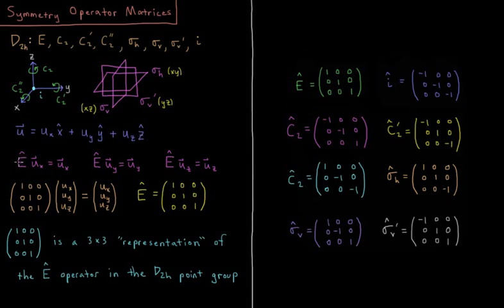So if we operate with the identity on this vector, E applied to the X part of it would just give the same back. E applied to the Y part of that vector would just give the same thing back. And E applied to the Z part of that vector gives the same thing back. So this is equivalent to the following matrix. If we have this matrix where we have ones down the diagonal and zeros everywhere else, that acting on the vector uX, uY, uZ, representing the three components of this vector,